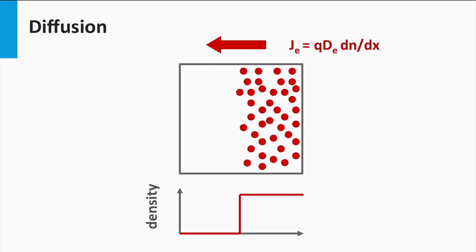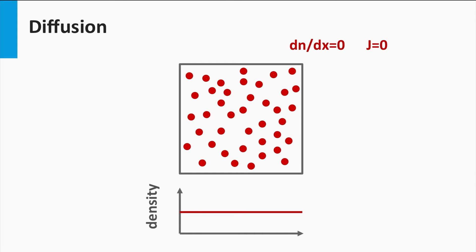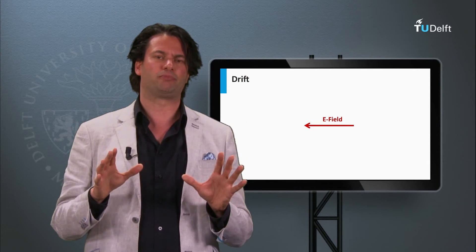The net movement of particles induced by density gradients is called diffusion, and it can be described by Fick's law of diffusion. J_e is the electron current density expressed in current per area, Q is the elementary charge, D is the diffusion coefficient of the electrons, and dn/dx represents the density gradient in direction x. The diffusion of electrons results in a net movement of electrons to the location with lower electron densities, and diffusion will be present as long as there is a density gradient. The same equation is valid for holes — the diffusion of holes results in a net movement of holes to the location with lower hole densities.